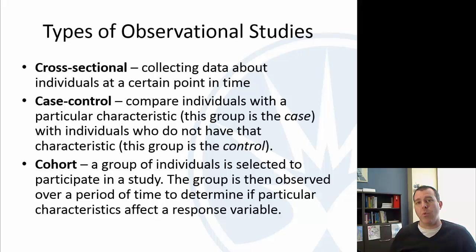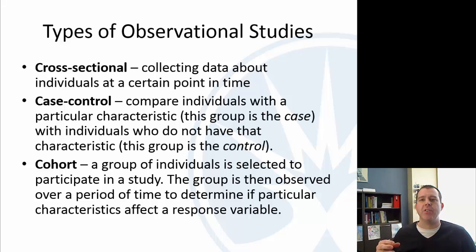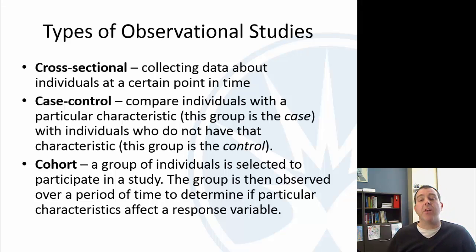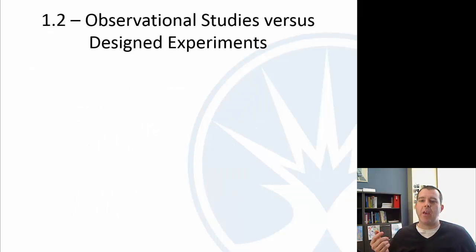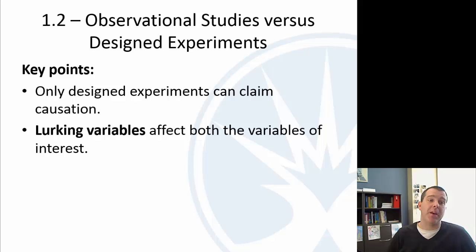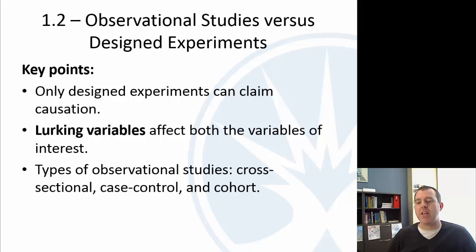A cohort study is when people are tracked over a period of time. You start with a bunch of volunteers and track them over time, then look at the ones within that group who did what you were interested in versus those who did not. To summarize the key points: only designed experiments can claim causation — that's really important. The reason is because of lurking variables that can affect both variables you're interested in. The three types of observational studies are cross-sectional, case control, and cohort.